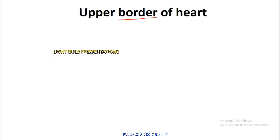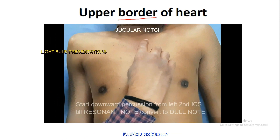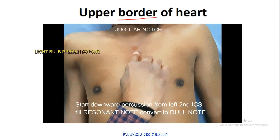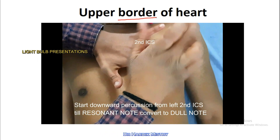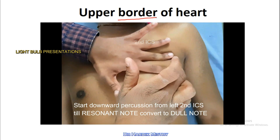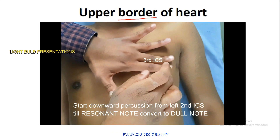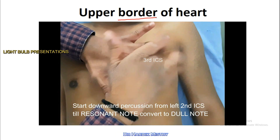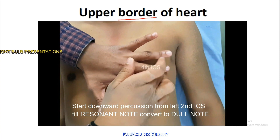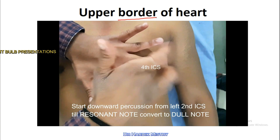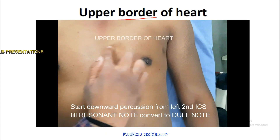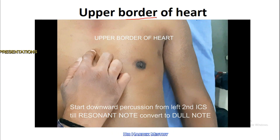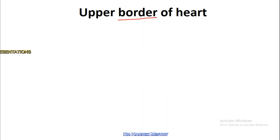For the upper border of the heart, identify the second intercostal space and try to locate the third and fourth intercostal space. Start your percussion from the second intercostal space towards the third, then the fourth intercostal space. Mark in which intercostal space your resonant note is converted to the dull note — that is the upper border of the heart.